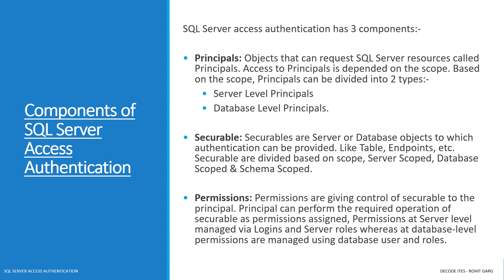Principals are the ones to whom we can grant access, and Securables are those on which we will grant the access. Permissions give control of a Securable to a Principal — what control or access you want to give to a particular Principal on a particular Securable falls under Permissions. A Principal can perform the required operation on a Securable as per the permissions assigned. Permissions at server level are managed via logins and server roles, whereas at database level, permissions are managed using database users and roles.